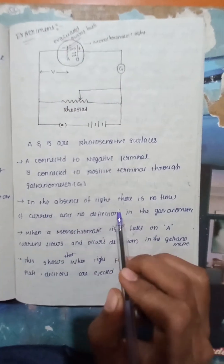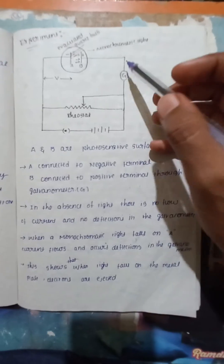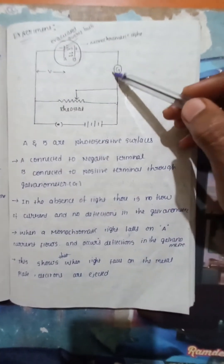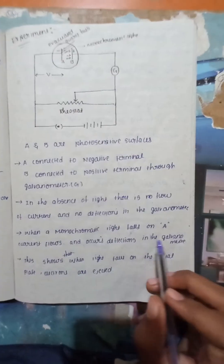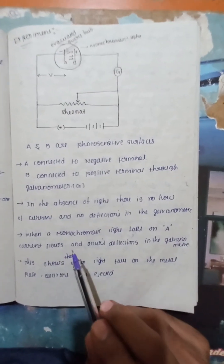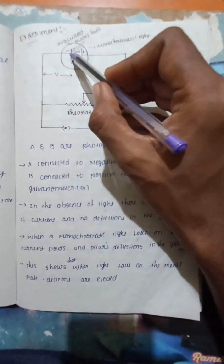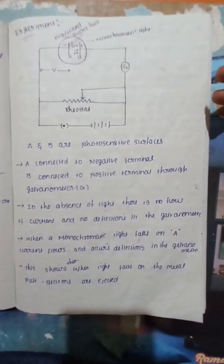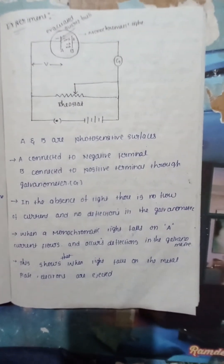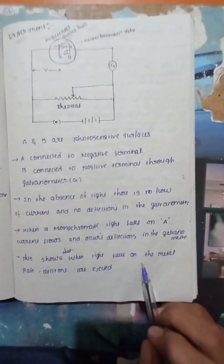In the absence of light, there is no flow of current and no deflection in the galvanometer. When monochromatic light falls on surface A, current flows and deflection occurs in the galvanometer. This shows that when light falls on the metal surface, electrons are ejected.